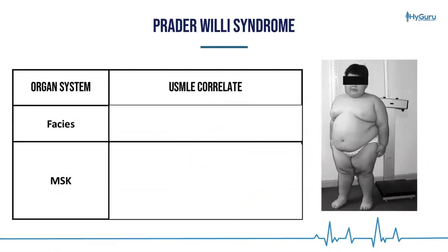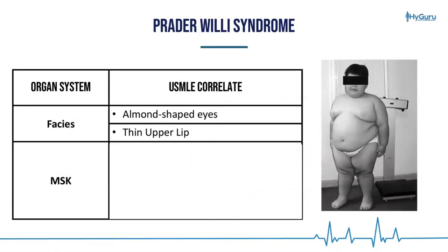Let's talk about Prader-Willi syndrome. The characteristic faces include thin almond-shaped eyes as well as a thin upper lip. It's important to recognize that a thin upper lip is also going to be in the differential for fetal alcohol syndrome.